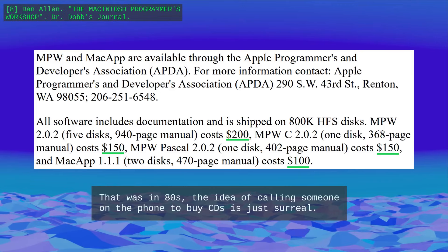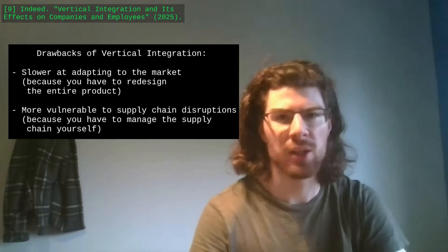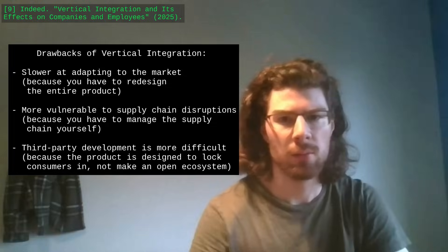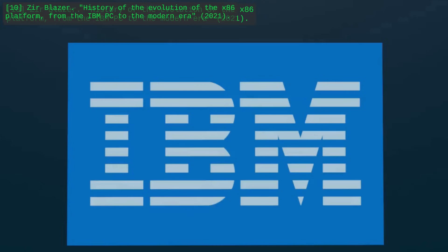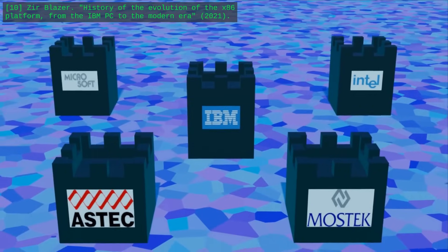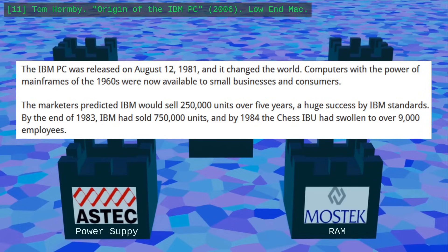However, there are drawbacks to controlling your products too much. It makes you slower at adapting to the market, more vulnerable to supply chain disruptions, and it makes third-party development more difficult. IBM realized it — it wanted to enter the home computer market, but developing a new product from scratch would have taken too much time. So instead, it decided to assemble components made by other companies. And it worked! The IBM personal computer became a commercial success. It also backfired.